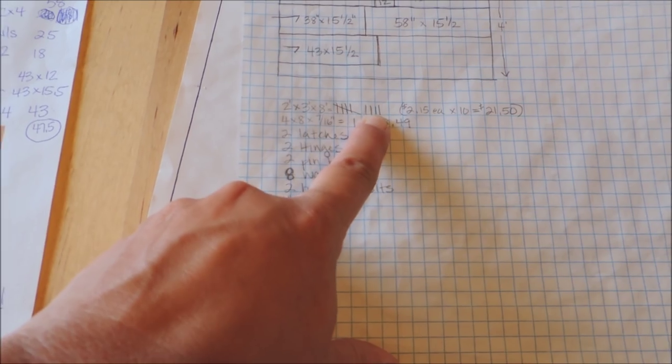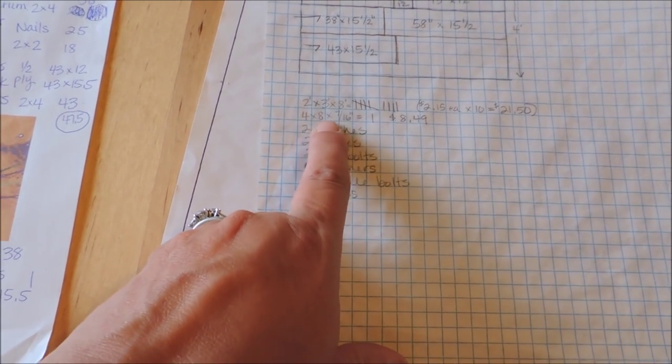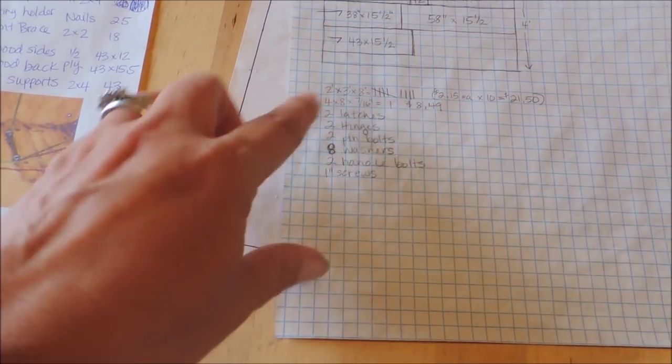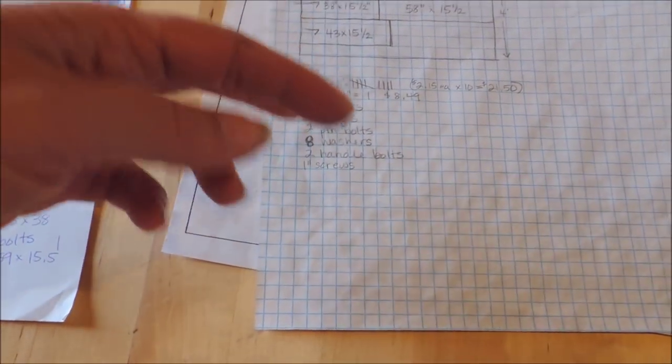So it looks like I used nine two by three by eight and then a sheet of four by eight seven sixteenths OSB and then I have latches, hinges, the pin bolts, all that.